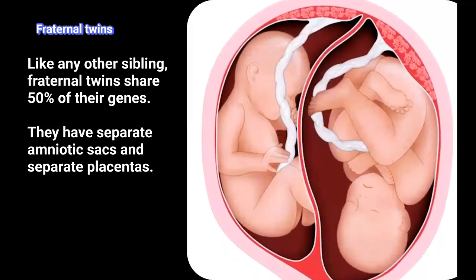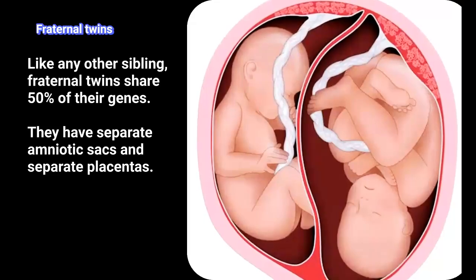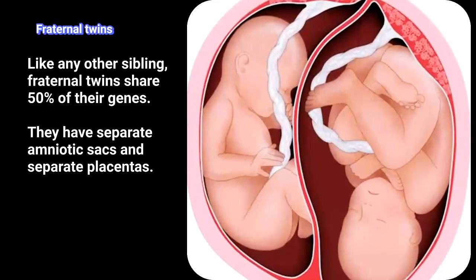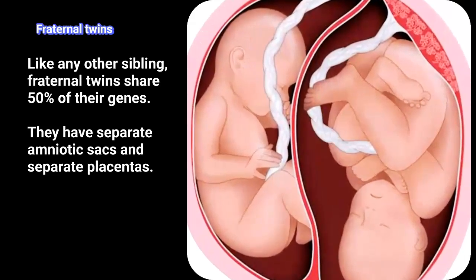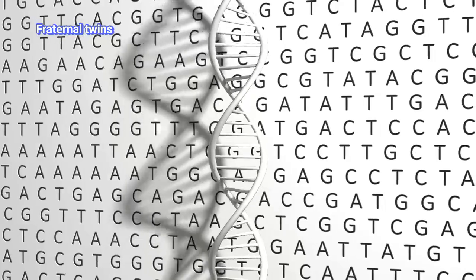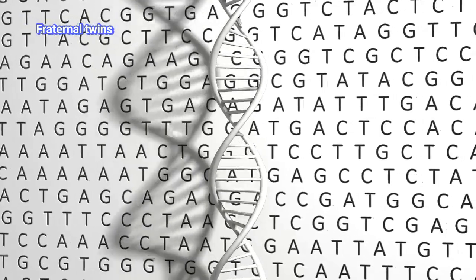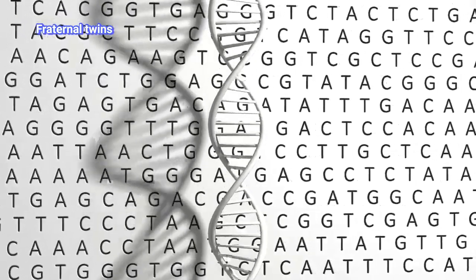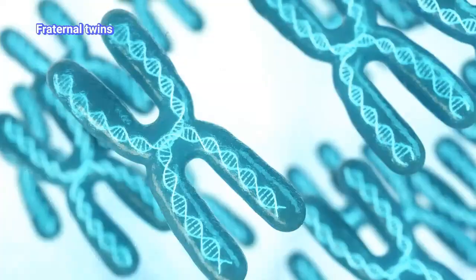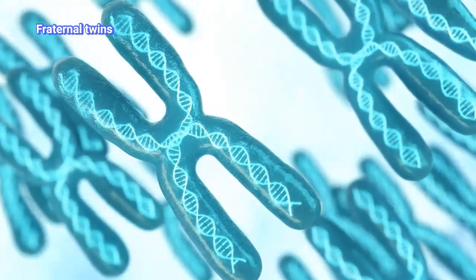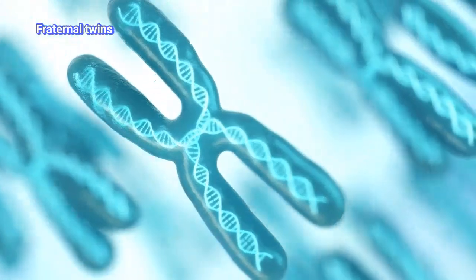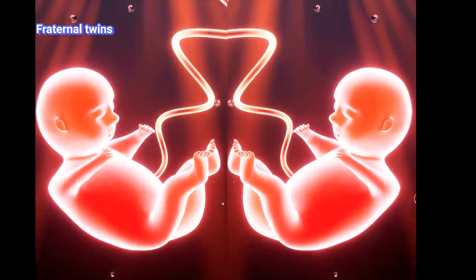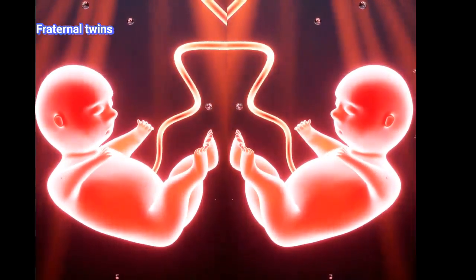Fraternal twins are a beautiful example of how two separate eggs can create twins, each with its own personality and traits. These twins are similar to any other siblings in terms of genetic relationship. They could be two boys, two girls, or a boy and a girl. They have separate amniotic sacs and separate placentas.